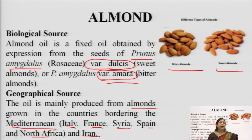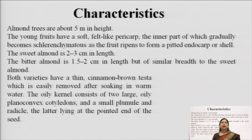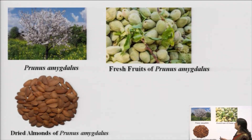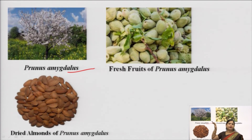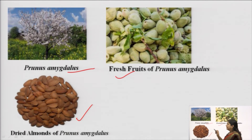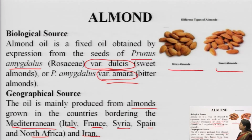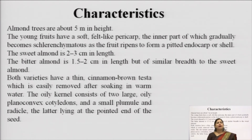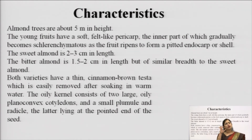Sweet almonds are found in India, but bitter almonds are generally not found in India. The almond tree is about 5 meters in height. The fresh fruits look green and inside are the seeds, which are the dried bitter almonds. The young fruits have a soft felt-like pericarp, and as the fruits mature the inner part of the pericarp gradually becomes harder due to the formation of sclerenchymatous cells with significant lignin deposition.